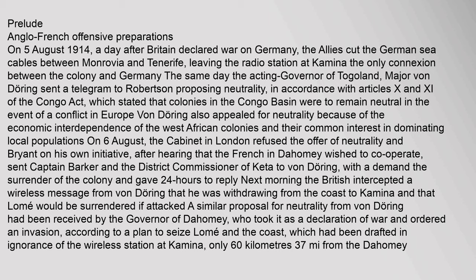Von Doering proposed neutrality in accordance with Articles X and XI of the Congo Act, which stated that colonies in the Congo Basin were to remain neutral in the event of a conflict in Europe. Von Doering also appealed for neutrality because of the economic interdependence of the West African colonies and their common interest in dominating local populations. On 6 August, the cabinet in London refused the offer of neutrality, and Bryant, on his own initiative after hearing that the French in Dahomey wished to cooperate, sent Captain Barker and the District Commissioner of Queda to Von Doering.